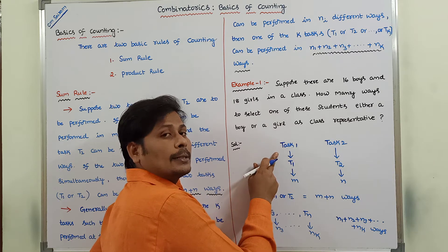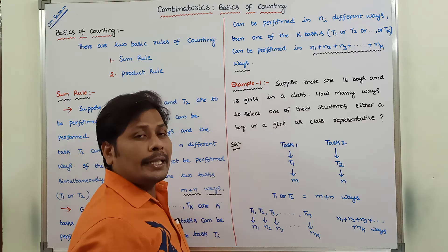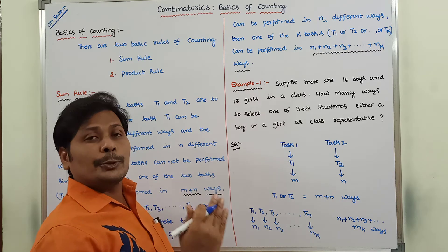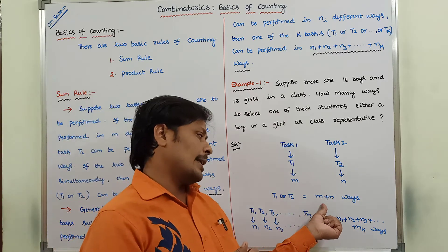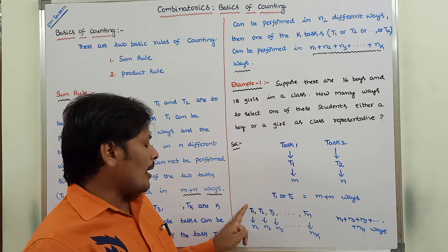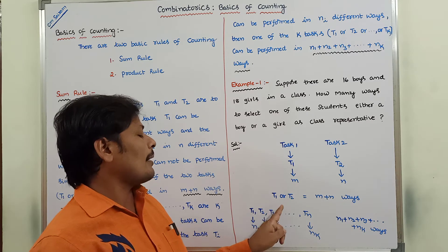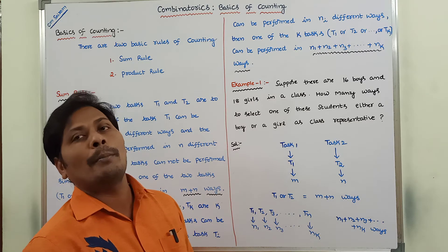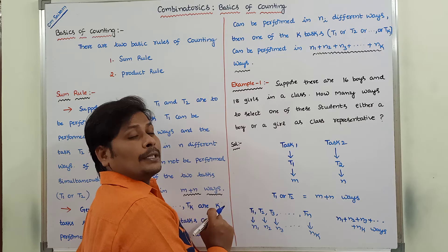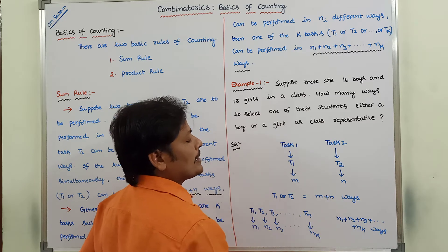So to summarize: two tasks can be performed where T1 is performed in M different ways and T2 is performed in N different ways, and T1 and T2 cannot be performed simultaneously. Then any one of the two tasks can be performed in M plus N ways. In general, if there are N number of tasks and T1, T2, T3 up to TK tasks such that no two tasks can be performed simultaneously, then one of the K tasks can be performed in N1 plus N2 plus N3 plus up to N-suffix-K ways.